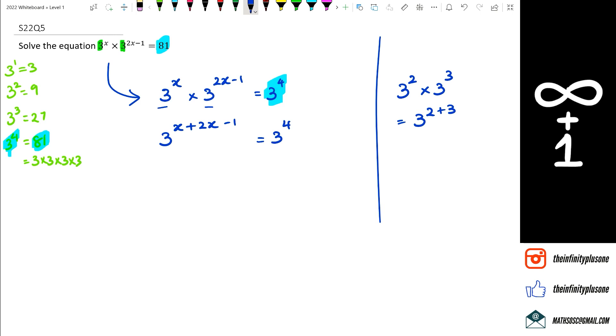The next thing is simplifying the power, so we're going to get 3 to the power of 3x minus 1 equals 3 to the power of 4.